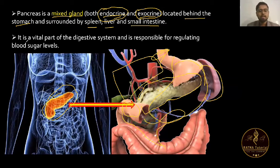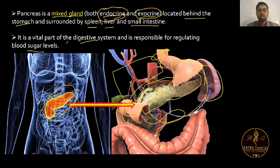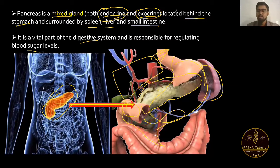Pancreas is a vital part of the digestive system — a very important part — and is responsible for regulating blood sugar level, that is, glucose level. It plays a very important role in blood glucose regulation.